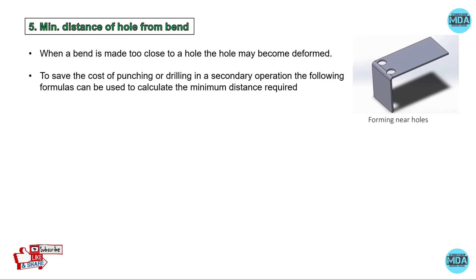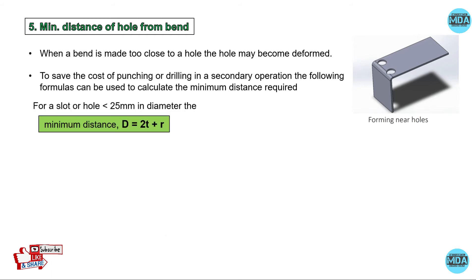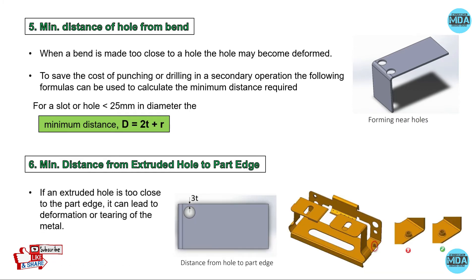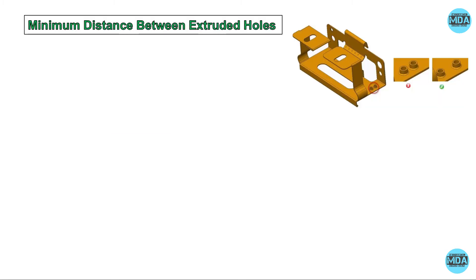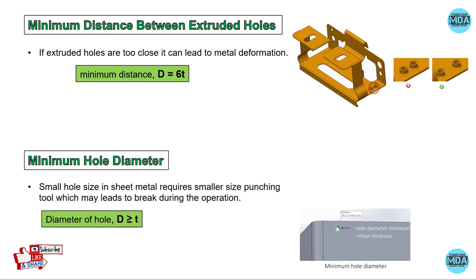For the minimum distance of a hole from a bend — if a hole is made too close to the edge, the material may deform. The minimum distance should be two times thickness plus radius. For extruded holes, the minimum distance from the part edge must be greater than or equal to three times thickness. The minimum distance between two extruded holes should be six times thickness. The minimum hole diameter must be greater than or equal to the material thickness.